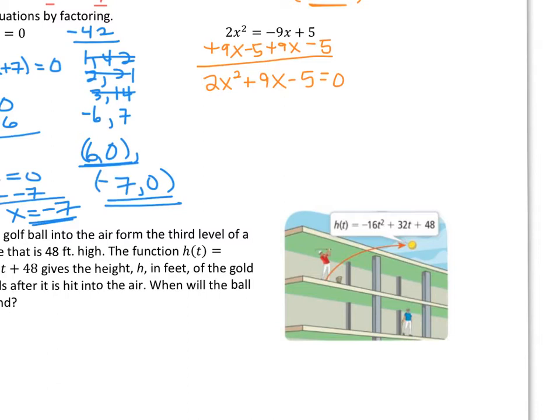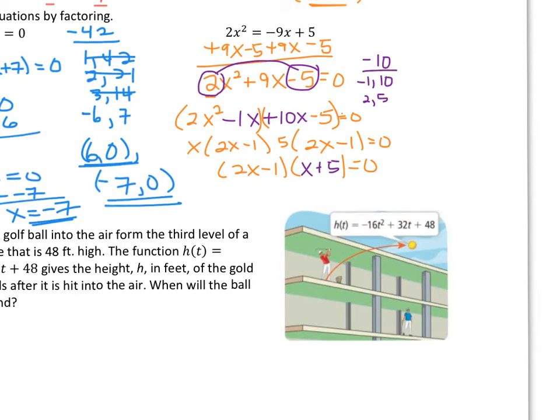Since a is 2, we're going to have to multiply a times c and split to get b. Pause the video and see if you can factor this quadratic function, then press play and we'll solve. For the two factors, we get 2x minus 1 and x plus 5. You can write the parentheses in either order, but you have to have 2x minus 1 in one of the parentheses and x plus 5 in the other. If you didn't get that, look at the work shown and see if you can figure out where things went differently.